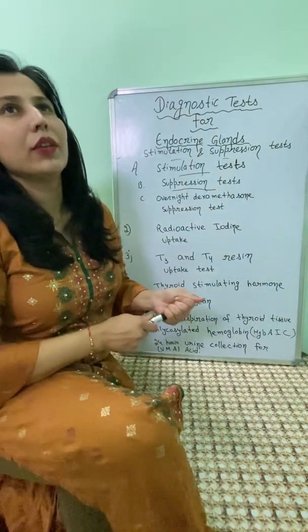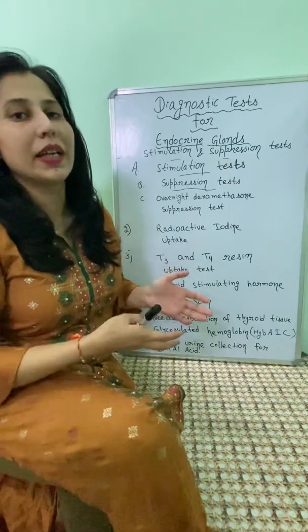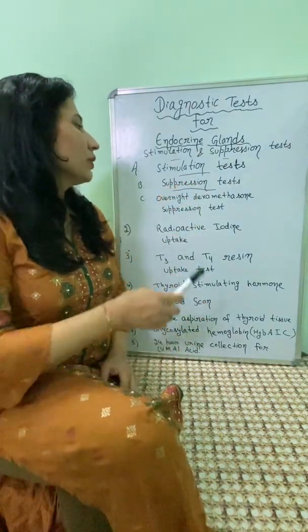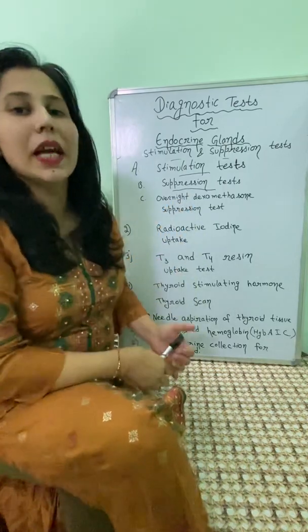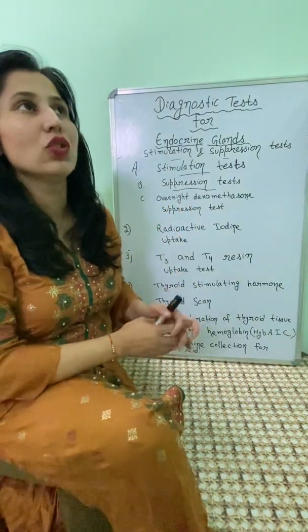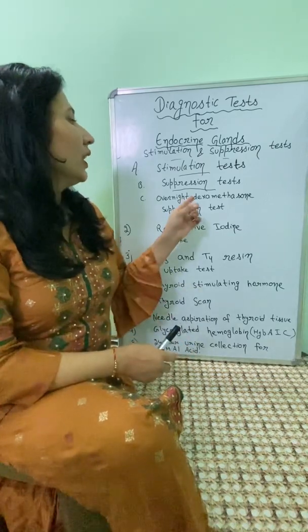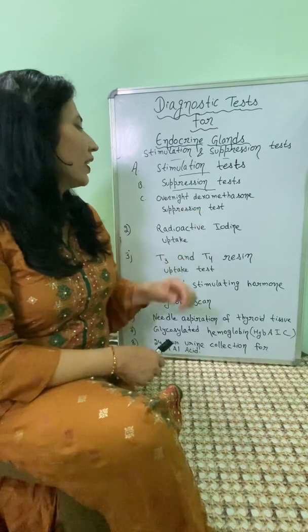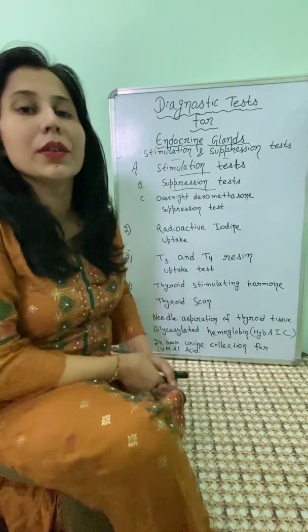Next is the suppression test. If there is overactivity of an endocrine gland — such as the thyroid or pituitary gland — we give suppressing agents. If there is still no suppression after giving those agents, it means there is hyperfunction of the endocrine gland.